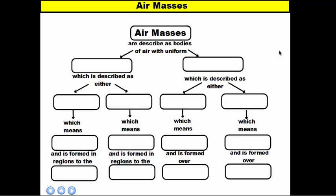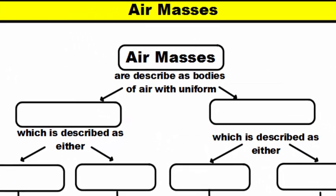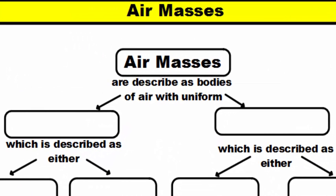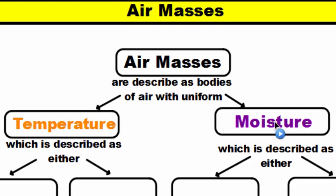First off, the first thing that you need to know is what an air mass is. An air mass is what it sounds — it's a big mass of air, a big body of air, and throughout that body of air it has uniform characteristics, or the same characteristics throughout the entire mass. Those characteristics usually refer to two things: temperature and moisture level or humidity.